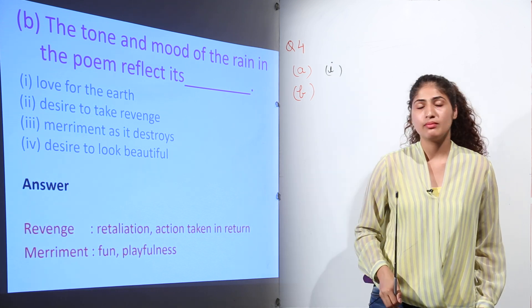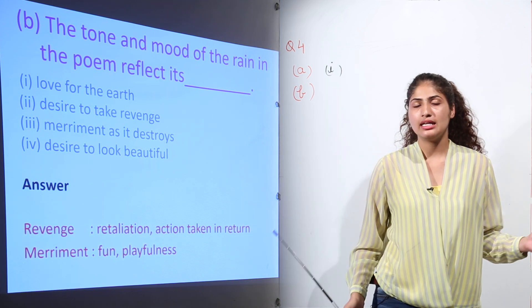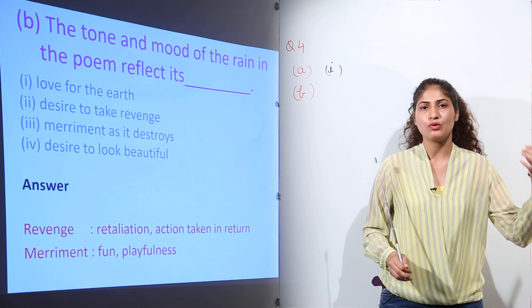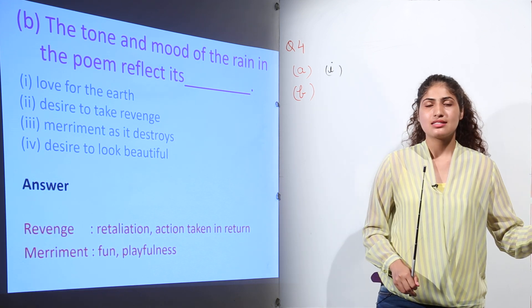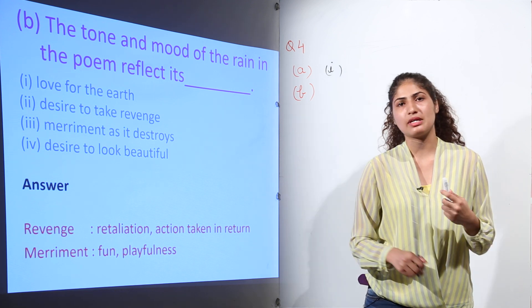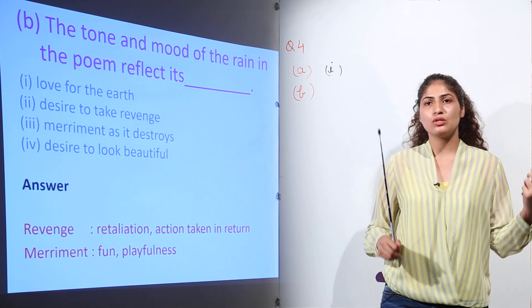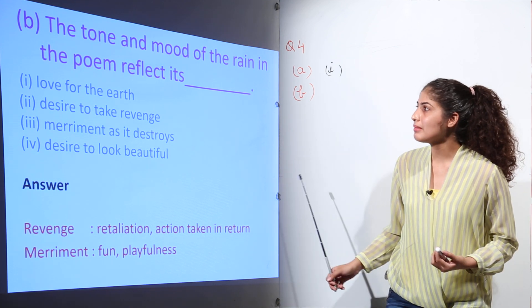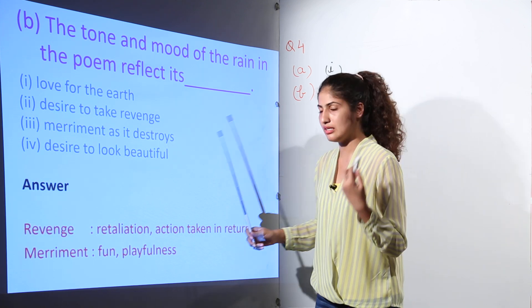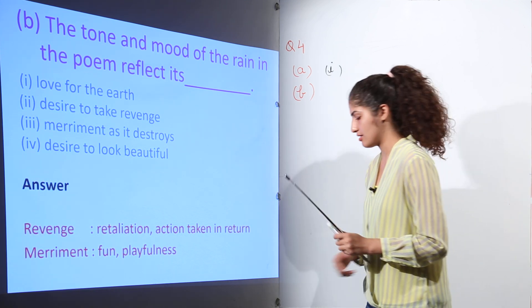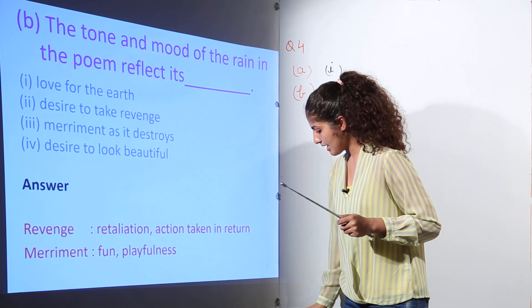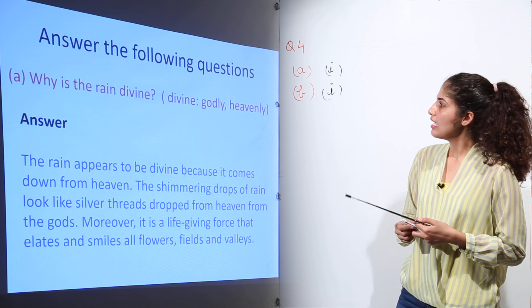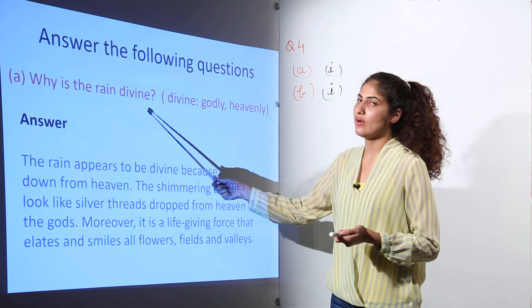In the poem from beginning to the end, the rain has discussed the various parts of the earth. Sometimes it talks about the heaven, sometimes about the flowers, sometimes the trees, and sometimes the human beings also. So that means it is in love with the earth. So the option would be love for the earth, option one.